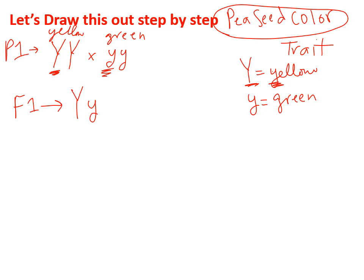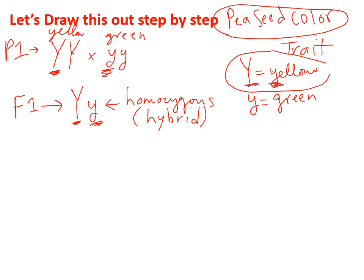Notice each organism has two alleles. In this case, the F1 is heterozygous — it has one capital and one lowercase allele. Two different alleles means it is heterozygous, which we also call a hybrid. Now what will this organism look like? Since you see a dominant capital letter, it will look like whatever the dominant capital letter color is. So all of these F1 will look yellow. When you cross the F1 to make F2, you make a Punnett square. You put an F1 parent on each side and one allele in each spot.